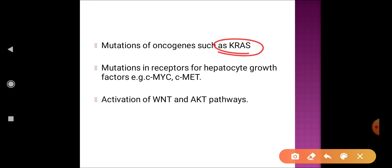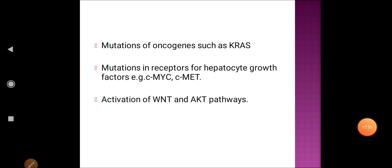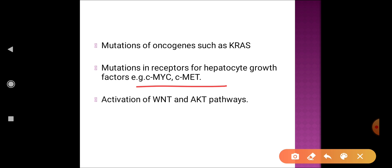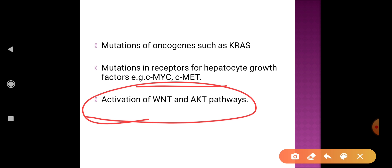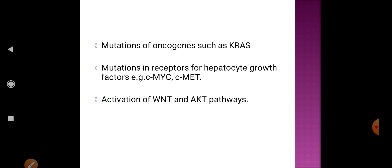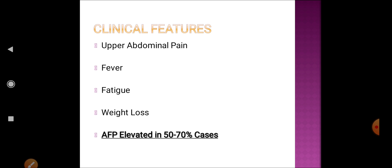Additional pathogenetic mechanisms include mutation of certain oncogenes such as K-ras, mutation in receptors for hepatocyte growth factor (c-myc and c-met mutations), and activation of the Wnt/Akt pathway. All these will be discussed in detail in the neoplasia chapter.